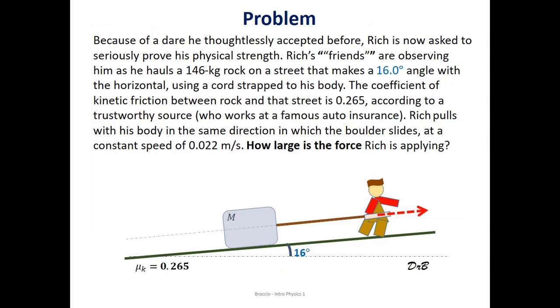Welcome back. Because of a dare he thoughtlessly accepted before, Rich is now asked to seriously prove his physical strength. Rich's friends are observing him as he holds a 146 kg rock on a street that makes a 16 degree angle with the horizontal using a cord strapped to his body.